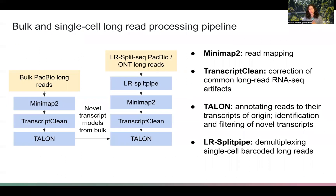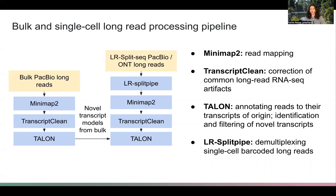As a brief overview for processing, both for the bulk and the LR split-seq data: on the bulk side, it's a typical workflow — we first map our reads, correct common long-read sequencing artifacts such as micro-indels, and then annotate reads to their transcripts of origin and filter novel transcripts. We use these novel transcripts and annotated transcripts as our reference for the LR split-seq data, because LR split-seq is not so great at picking up novel transcripts. So with the exception of an additional demultiplexing step and a different reference, the LR split-seq processing pipeline looks identical.